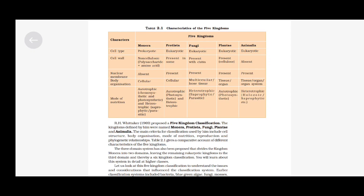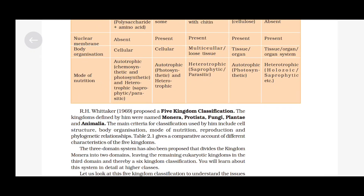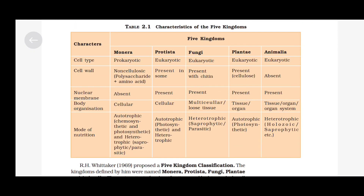Table 2.1 gives a comparative account of different characteristics of the five kingdoms. Kingdom Monera: cell type is prokaryotic, cell wall is non-cellulosic (polysaccharide plus amino acid), nuclear membrane is absent, body organization is cellular, and mode of nutrition is autotrophic — chemosynthetic and photosynthetic — and heterotrophic, that is saprophytic and parasitic.